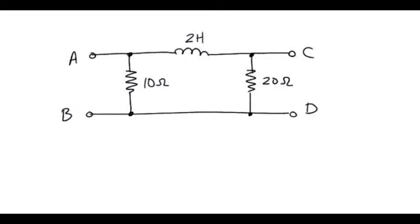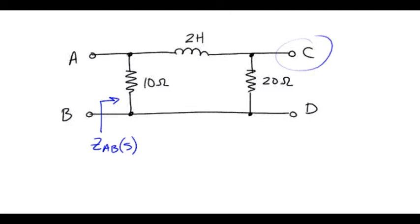This problem has several parts. We're supposed to find the driving point impedance at various terminal pairs and then look for some results. The first thing we're looking for is the driving point impedance at terminals A,B, so we can ignore the other sets of terminals for the purposes of this first part.